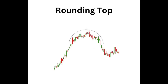A rounding top will indicate a market reversal where the sentiment is moving from bullish to bearish. It will appear as an inverted U shape. In a rounding top scenario, there is an initial increase in price as the number of buyers is larger than sellers. But once the price arrives at the top from the buying, sellers will start to outstrip the buyers, and the price will begin to decrease.